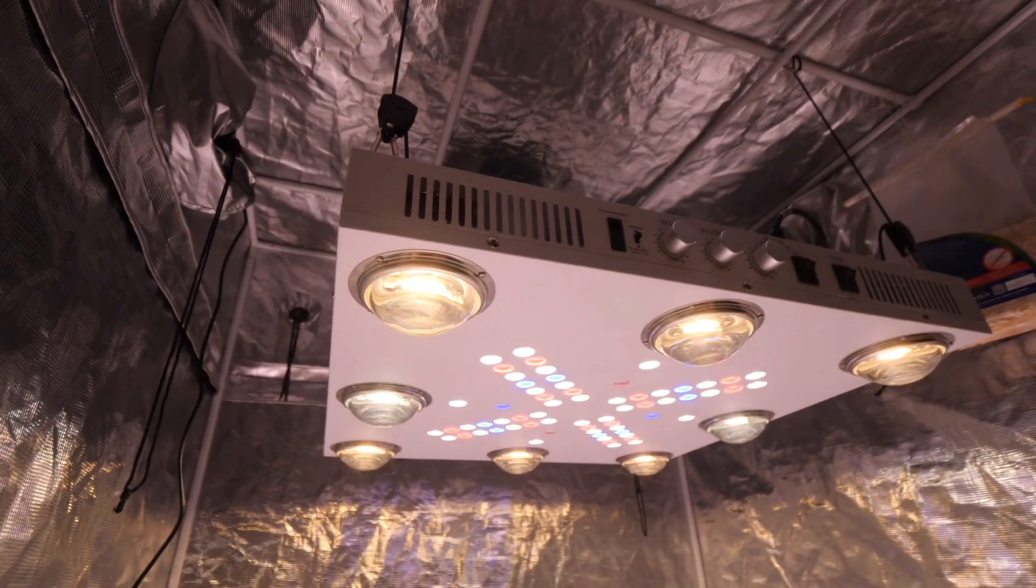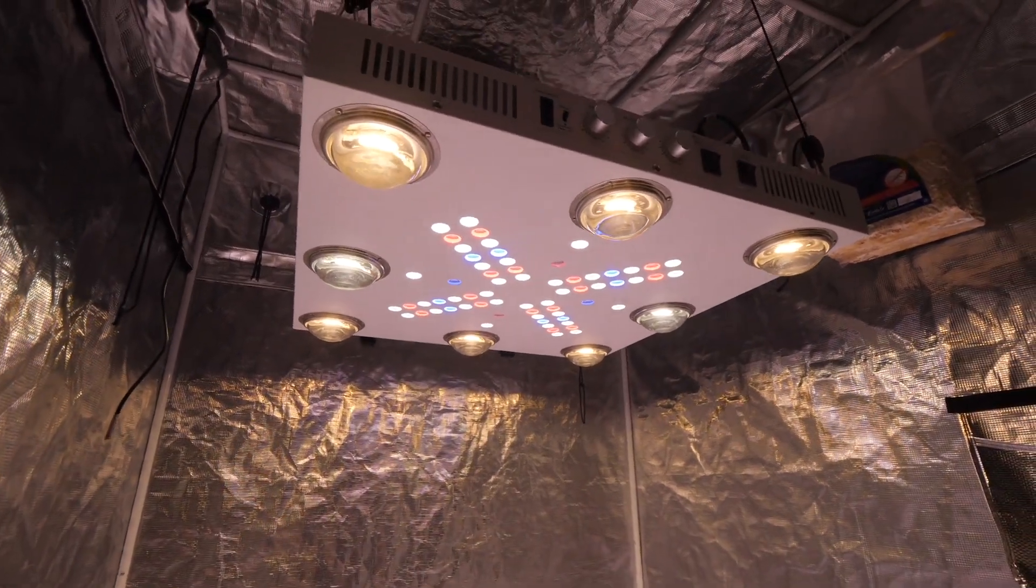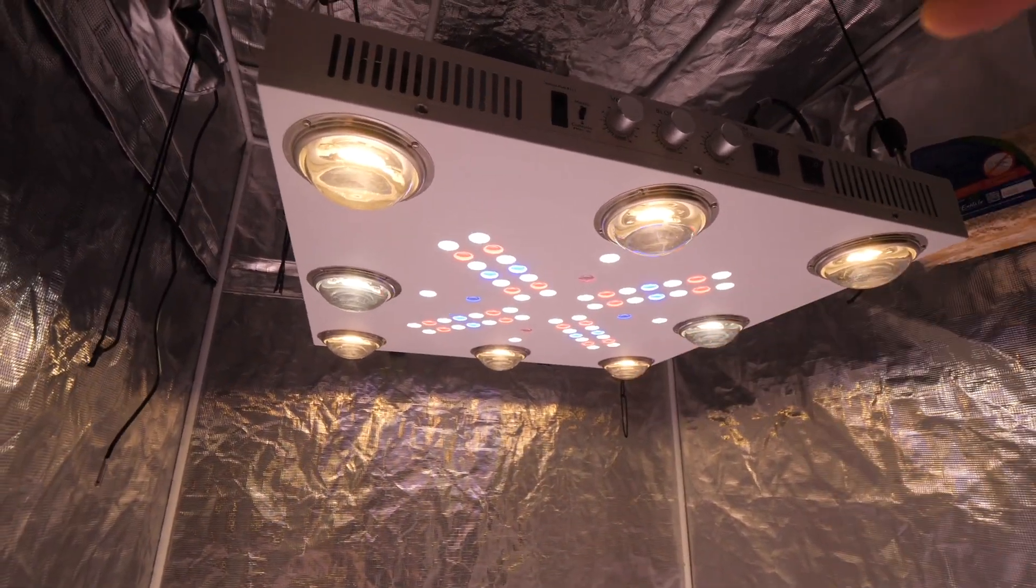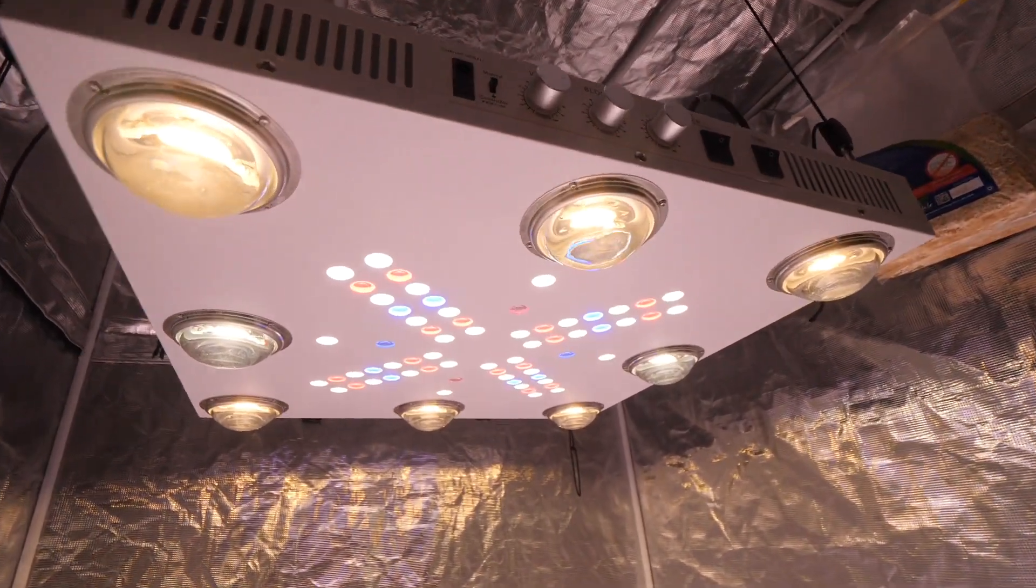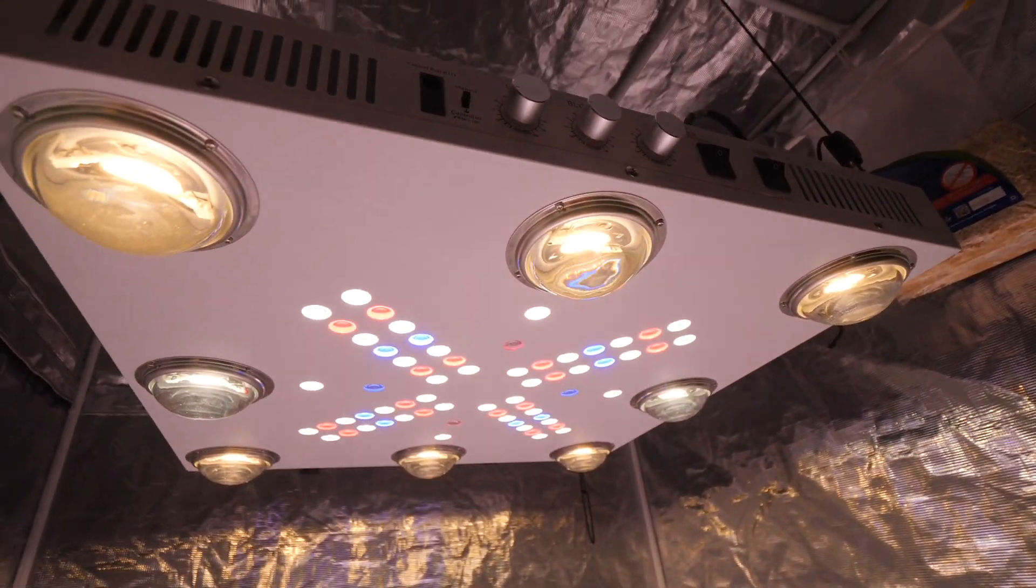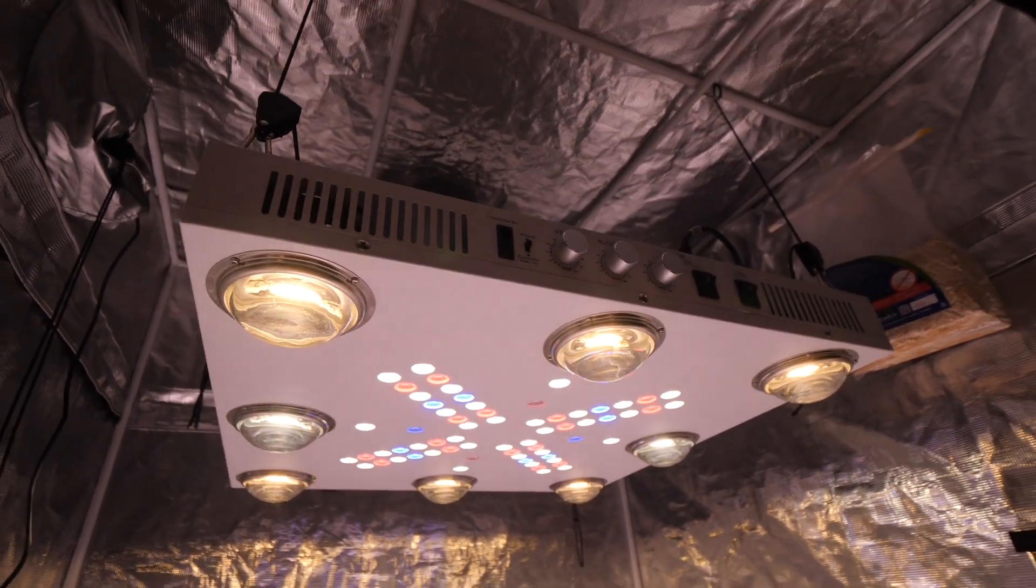These are rocking top end Cree cobs in here. This is pretty much the go-to light for a lot of commercial growers. This is their favorite light because this thing produces and it produces well. And they can grow monster plants with it and produce chunky fat nugs all the way down their canopies.